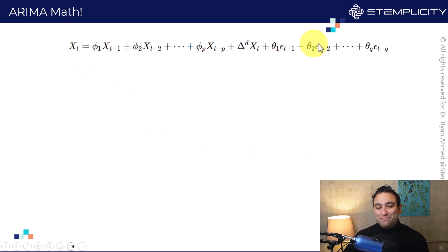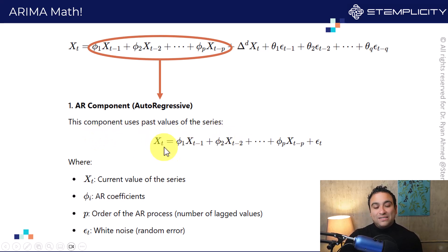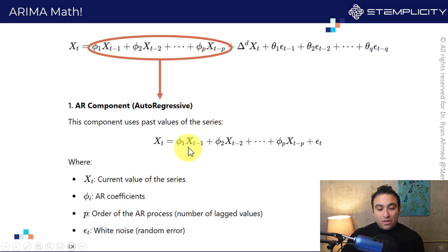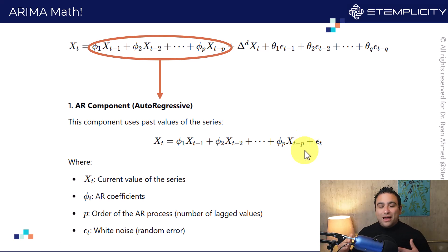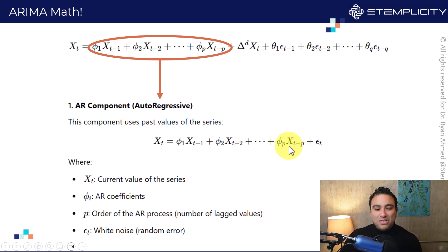Let's go back and take a look at the equation and break it down. The first piece is the autoregressive part — this component uses past values of the series. Xt equals phi 1 times Xt minus 1 plus phi 2 times Xt minus 2 and so on. Xt is the current value of the series at time t. The phi values are the autoregressive coefficients we're going to obtain. p is the order of the autoregressive process — how many timestamps I'm going to look back in the past. This parameter here is the white noise or random error.